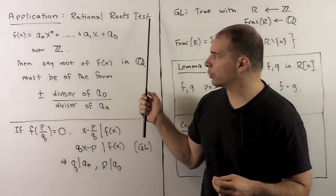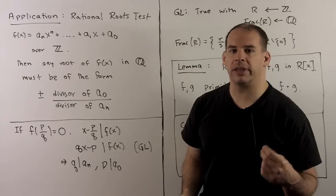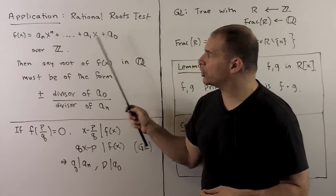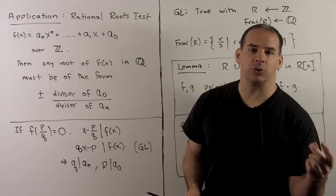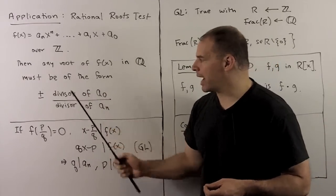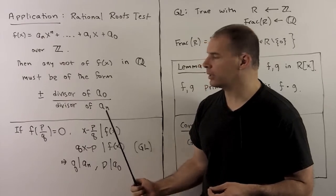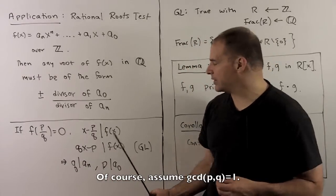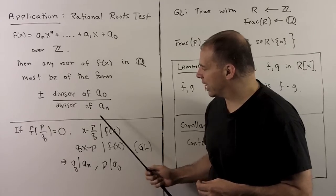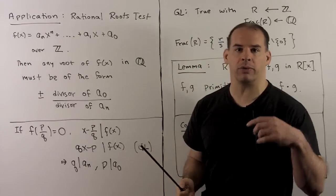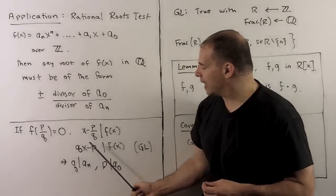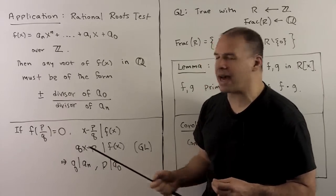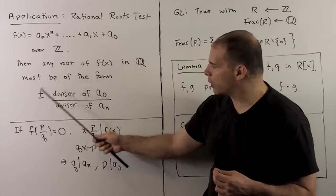For a familiar application, we have the rational roots test. Given a polynomial f(x) = aₙxⁿ + ··· + a₀ over the integers with aₙ non-zero, any rational root must be of the form ±(divisor of a₀)/(divisor of aₙ). To see this: suppose p/q is a rational root of f; then (x − p/q) divides f(x). By Gauss's lemma, we can rescale this factor by a unit to put it over the integers: (qx − p) divides f(x). Then multiplying out to get f(x), we must have q divides aₙ and p divides a₀, which is what we're looking for.